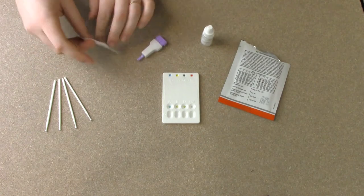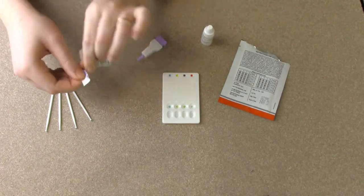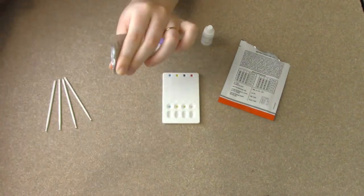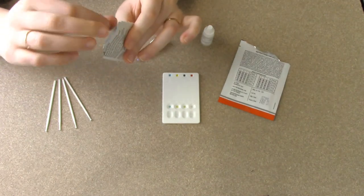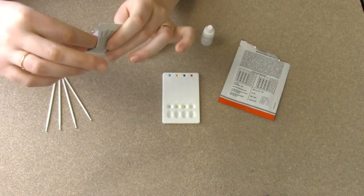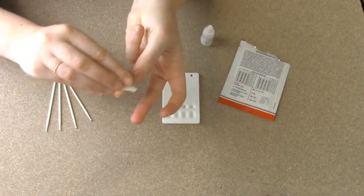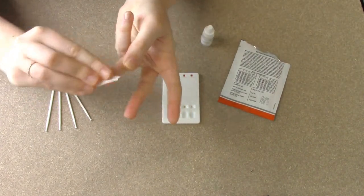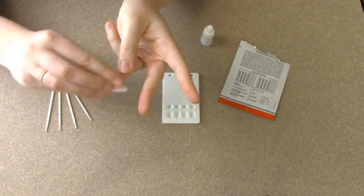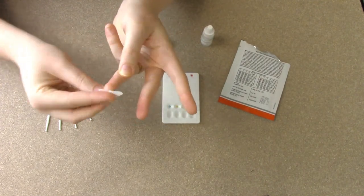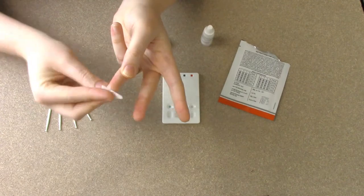So the very first step here is to open your alcohol prep pad and you're going to decide which finger you want to prick. So I'm going to choose a finger on my non-dominant hand so that I can use my right dominant hand for much of the process. So I will go ahead and do my ring finger here getting it nice and clean with the alcohol swab.